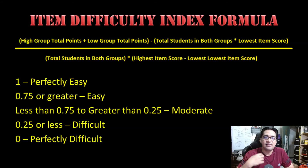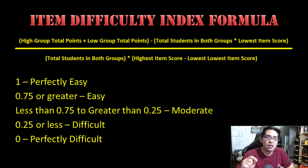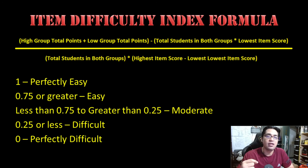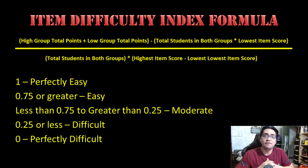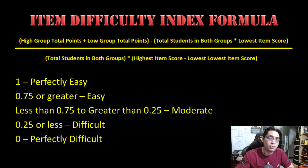The formula for the item difficulty index can be seen on the screen — you may want to pause to write it down. The formula is: the total points obtained by the high group plus the total points obtained by the low group, minus the quantity of the number of students in both groups times the lowest possible score, all divided by the total number of students in both groups times the quantity of the highest possible score minus the lowest possible score. The result is a number between 0 and 1. A result of 0.75 or higher indicates the item is easy; 0.25 or less indicates difficult; anything between 0.25 and 0.75 indicates moderate difficulty.